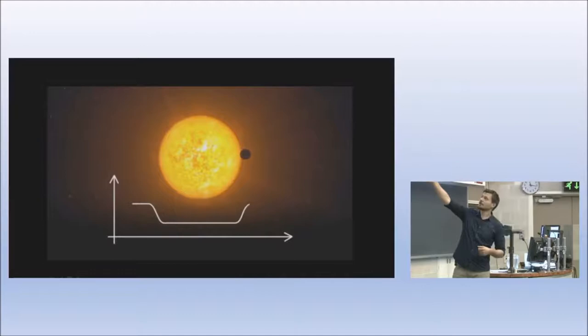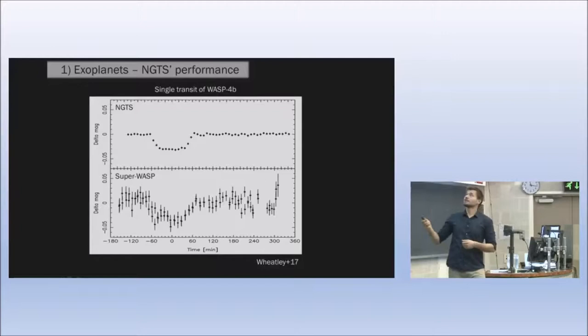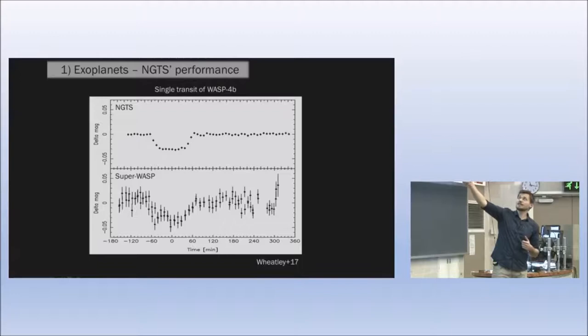To put NGTS precision into perspective, here's a comparison of NGTS data taken for a single transit event of a known exoplanet compared with the SuperWASP project, which was before NGTS, basically the state of the art and found hundreds of exoplanets. We see quite clearly there's a drastic improvement in precision.